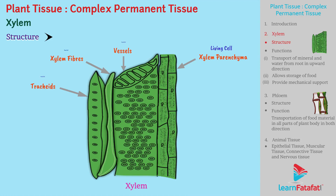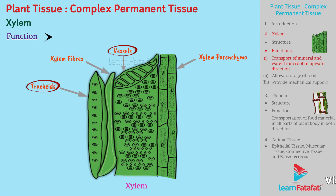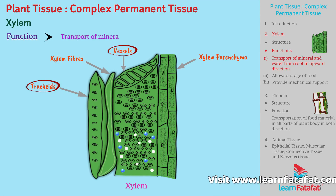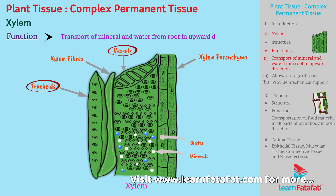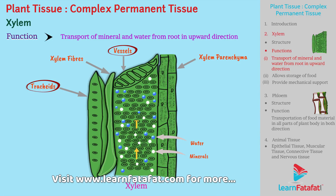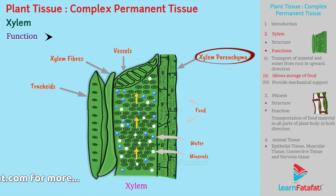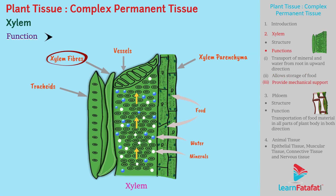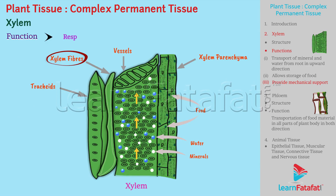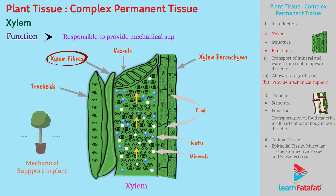Both living cells and dead cells are present in Xylem. Tracheids and Vessels are tube-like structures responsible for transport of minerals and water from the root in an upward direction. Xylem Parenchyma allows storage of food and is also responsible for sideways conduction of water. Xylem Fibers are found in between vessels and tracheids and are responsible for providing mechanical support.